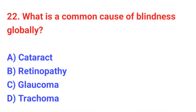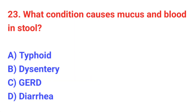Question number 22: What is a common cause of blindness globally? The correct answer is A: Cataract. Question number 23: What condition causes mucus and blood in stool? The correct answer is B: Dysentery.